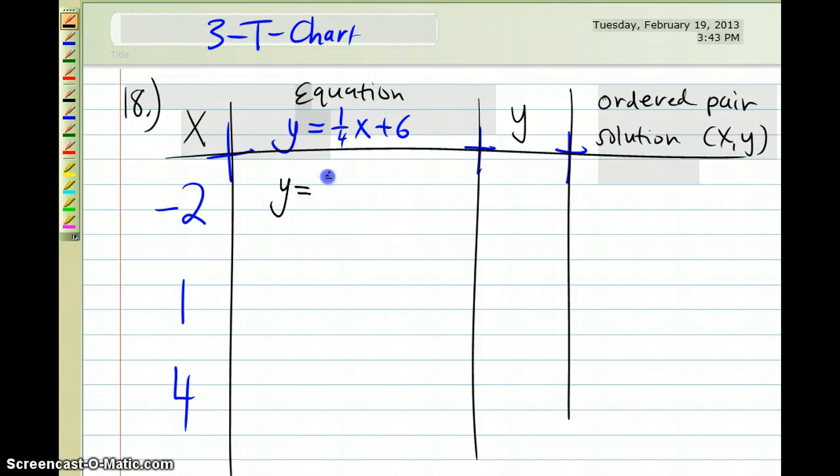I'm going to plug all those numbers in. Again, I have y is equal to 1 fourth times negative 2. And I'm going to change each of these numbers into fractions, negative 2 over 1. And I'm going to change it into fractions because when I multiply fractions, that's going to be a little easier for me. And then I'm going to add 6 afterwards. Okay, so 1 fourth times negative 2 over 1 is going to give me negative 2 over 4 plus 6. Negative 2 over 4, I'm going to simplify this fraction here, giving me negative 1 half plus 6.